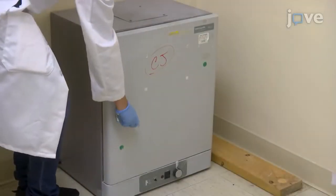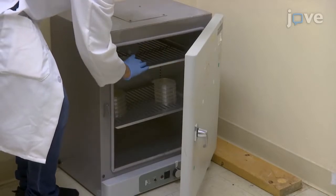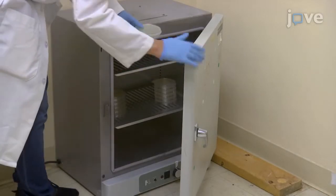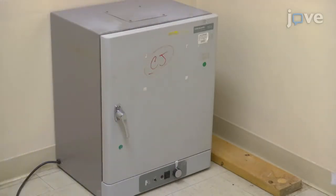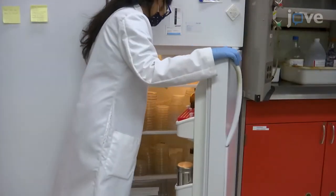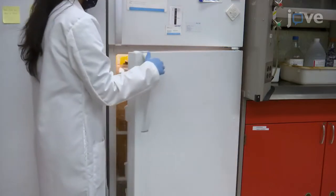After 16 to 18 hours, take the plate out of the incubator and leave it at 4 degrees Celsius for about 5 hours to let the superfolder green fluorescent protein, or SFGFP, develop for a more intense green color.